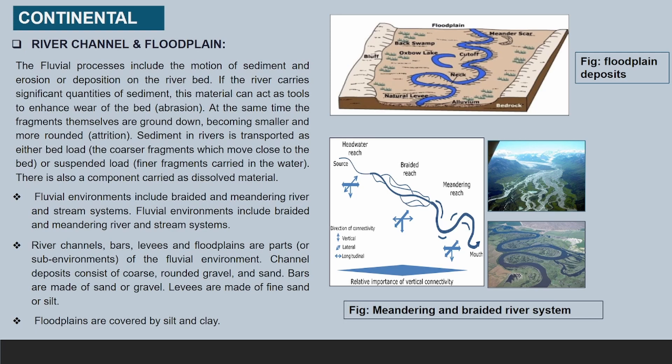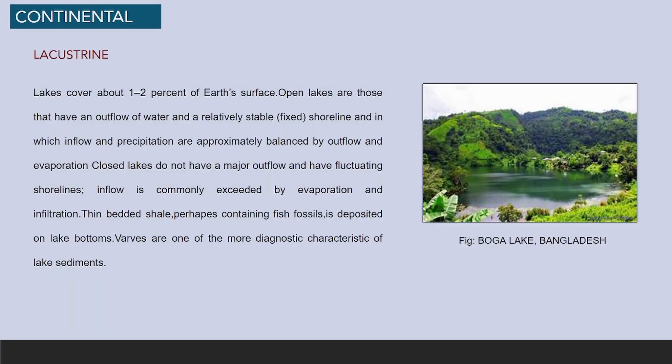Floodplains are covered by silt and clay. Next, lacustrine environment: lakes cover about 1–2% of the earth's surface. Open lakes have an outflow of water and a relatively stable shoreline in which inflow and precipitation are approximately balanced by outflow and evaporation. Closed lakes do not have a major outflow and have fluctuating shorelines. Varves are one of the major diagnostic characteristics of lake sediments.